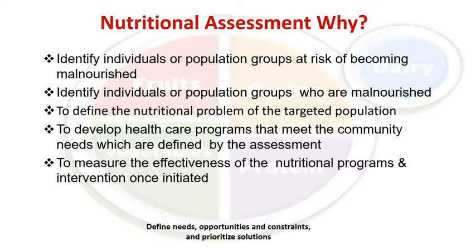The fourth point is to develop healthcare programs that meet the community needs defined by the assessments. Once we know which group is at risk or malnourished, and what type of deficiency is present, we use this information to develop programs to address that malnutrition. Then, we measure the effectiveness of the nutritional programs and interventions once initiated.